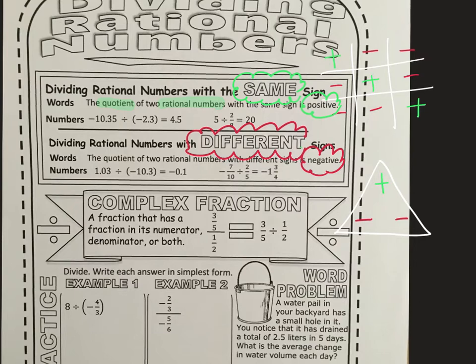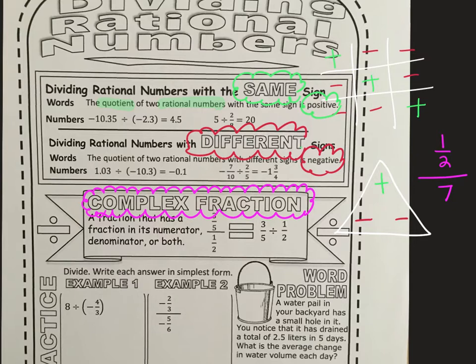A complex fraction — this is probably something a little new to you, so definitely make sure you're adding this to your notes. A complex fraction — another vocabulary word, so if you're keeping a separate vocabulary page, add that. It's a fraction that has a fraction in its numerator, denominator, or both. So you could have one half divided by seven — that's a complex fraction. Or five over two thirds, with just a fraction in the denominator. Or the example here, where we've got a fraction as both the numerator and the denominator.